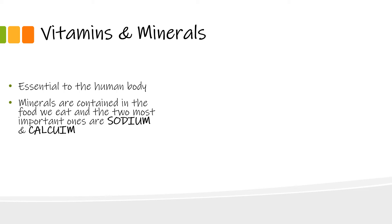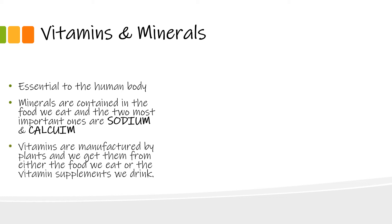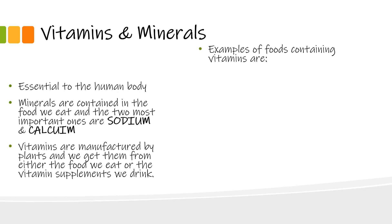Calcium is important for the strengthening of our bones and teeth. Most vitamins are manufactured by plants, so we get vitamins from the food we eat or from vitamin supplements. Now let's take a look at a table showing the different vitamins, the sources we can find them from, as well as their functions.